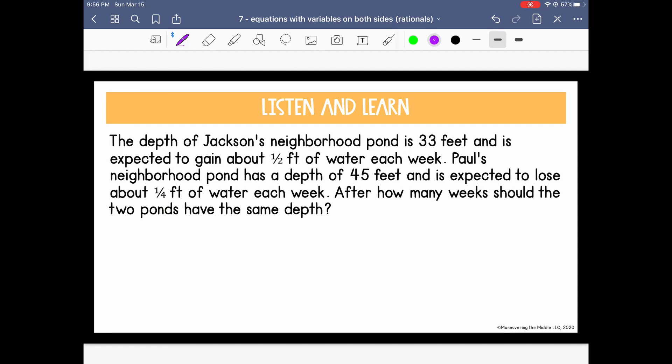All right, let's apply it here. We're going to write our own equation, but let's read through it first. Okay, so let's define our variable. I'm going to choose W, because we are looking for the number of weeks. And the number of weeks for what? We are looking for Jackson's Pond to have the same amount of water as Paul's Neighborhood Pond.